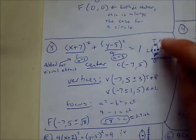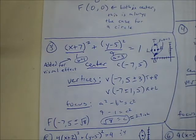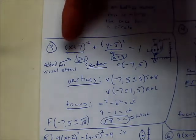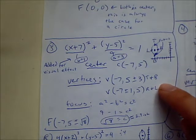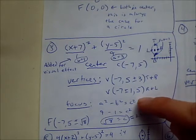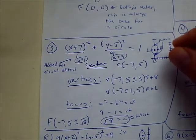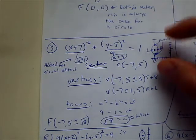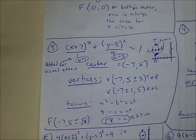For number 3, we count up and down 3 because A came from underneath the Y value — the vertical one. Then we count left and right 1 to get our vertices, written in that notation. To find the foci, we solve A squared minus B squared equals C squared and end up with the square root of 8. We count in the direction of the major axis — up and down — because it's a tall ellipse.